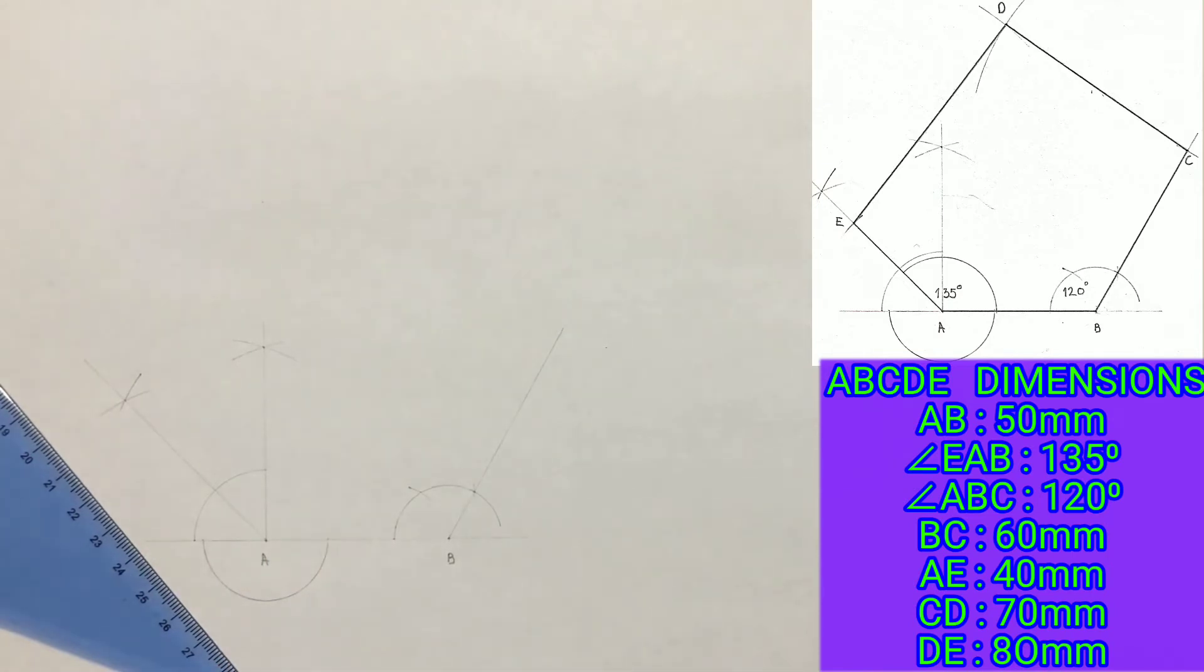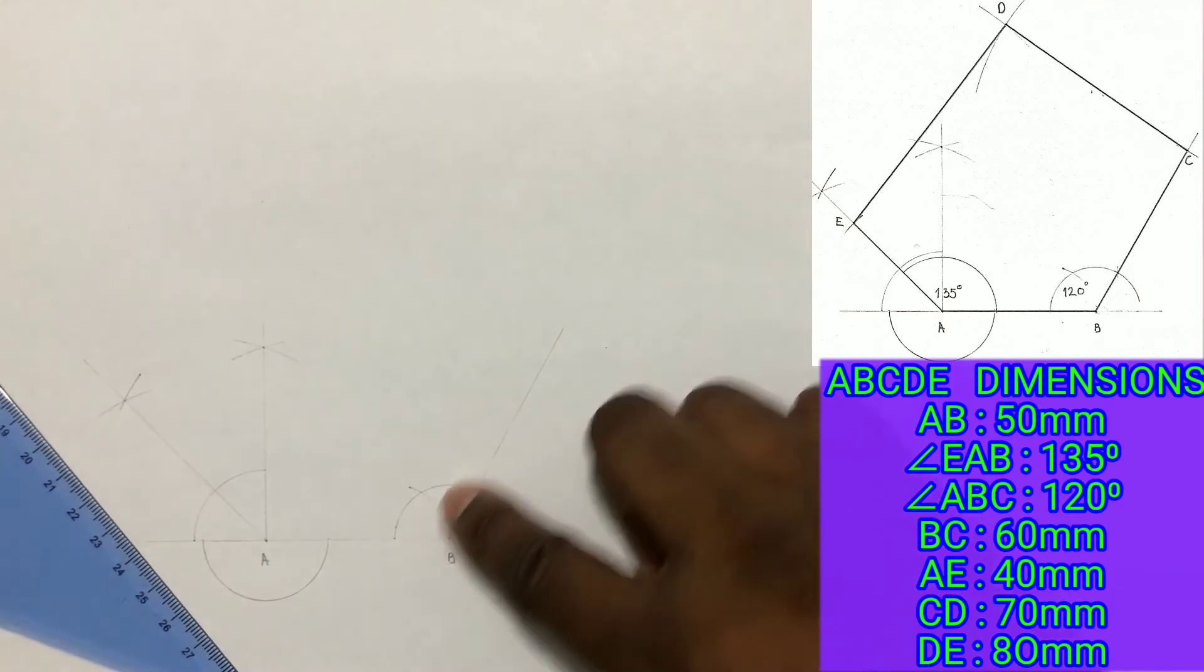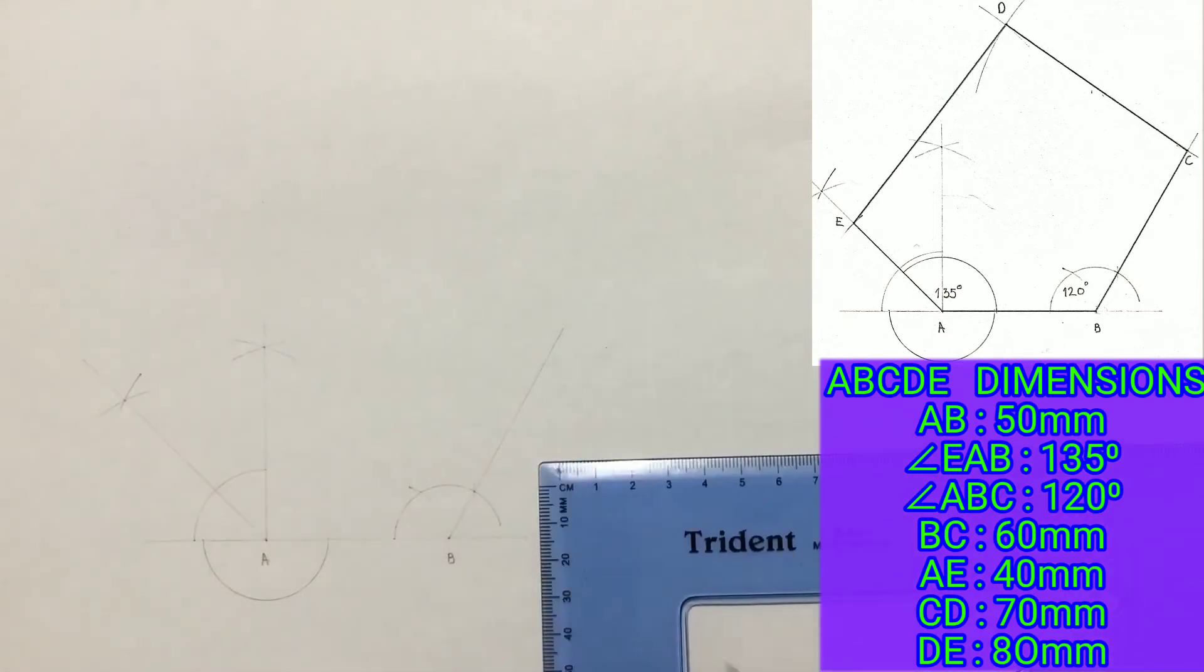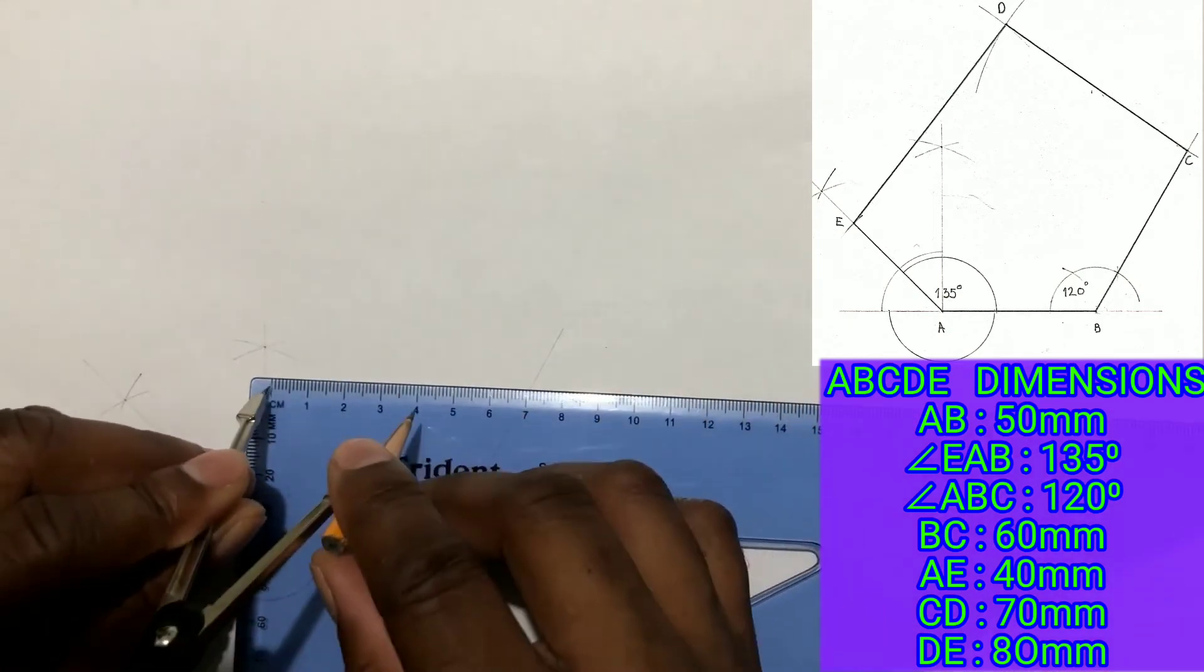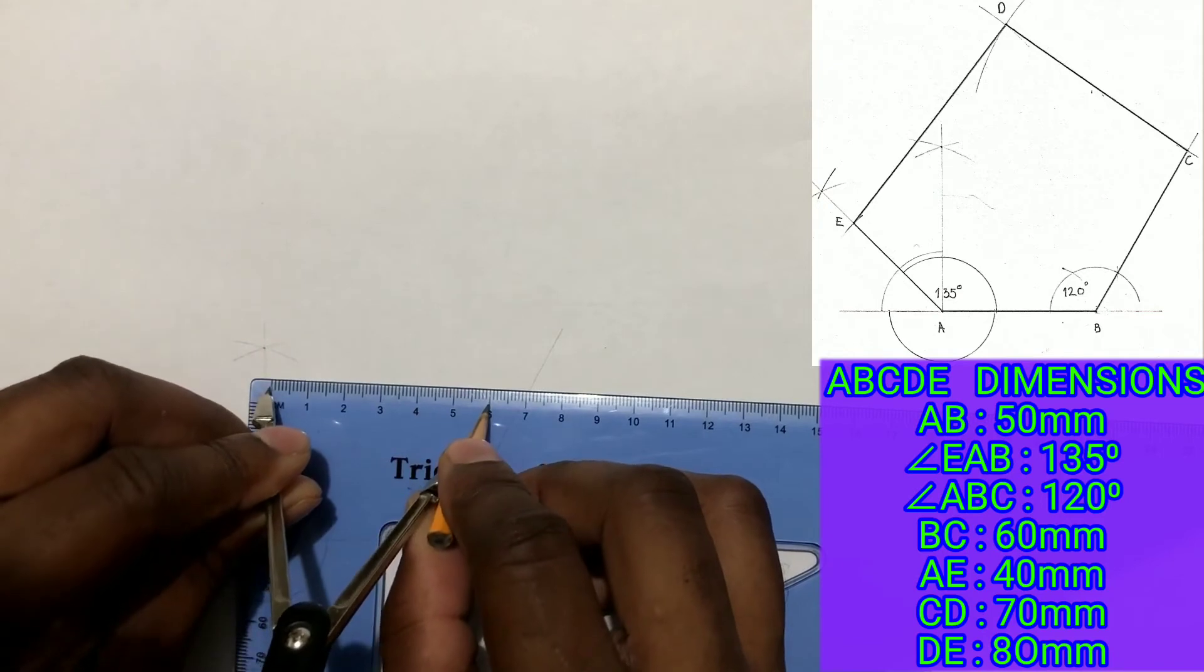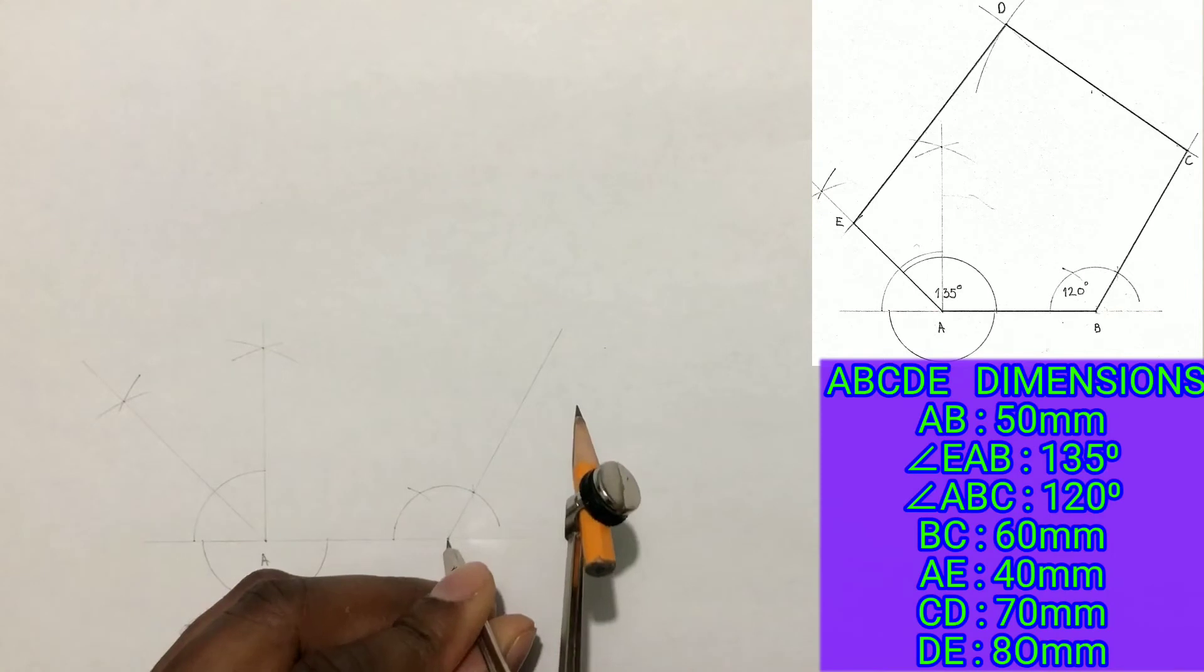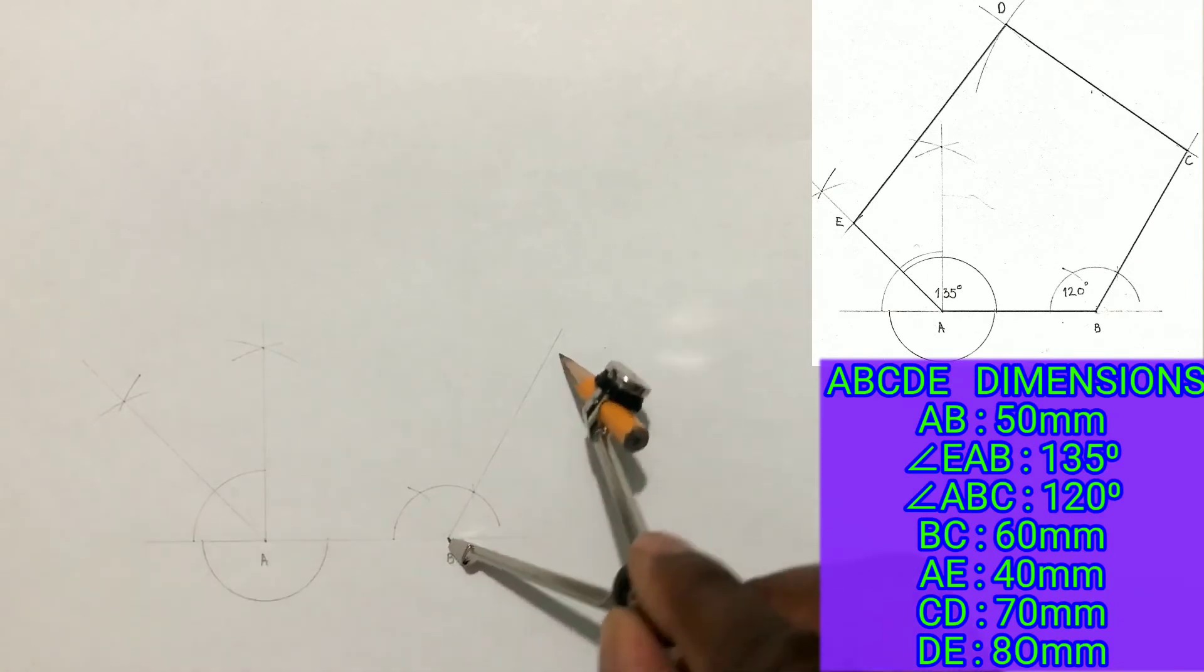Now from the given dimensions BC measures 60 millimeters. Open your compass to a radius of 60 millimeters. And from point B, scribe an arc to cut the line.